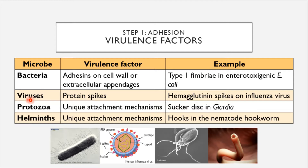Protozoa may have unique attachment mechanisms. For example, the protozoan parasite Giardia has a sucker disc it uses to attach to the intestinal wall. Helminths, or parasitic worms, also exhibit unique attachment mechanisms — the nematode hookworm has special hooks that allow it to attach to its host, as visible in a microscopic image.